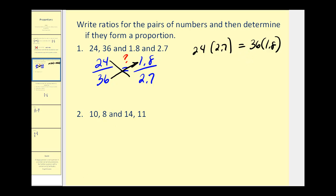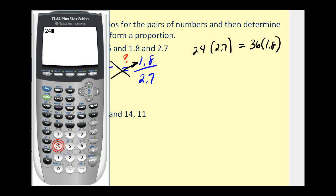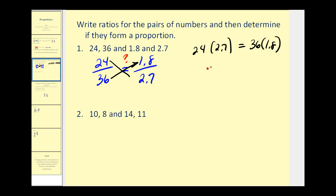Let's go ahead and see if it does. 24 times 2.7 and 36 times 1.8. They're either equal or not. And we can see they're both equal to 64.8. Therefore, this is a proportion.